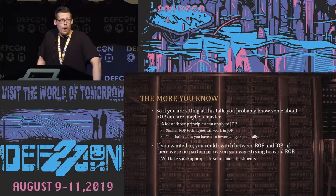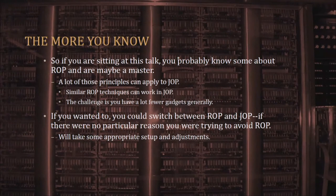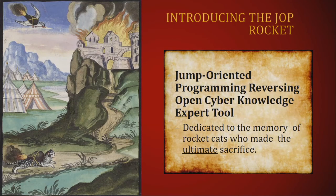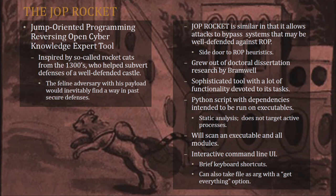Many of you are probably familiar with ROP — you may be masters of ROP. The good news is a lot of that can carry over, so some of those ROP techniques will also apply to JOP as well. At this point we want to introduce the JOP rocket and honor the sacrifice that ancient rocket cats made so many centuries ago to deliver their malicious payload. In the 1300s there were so-called rocket cats that would have explosives strapped to their back and would subvert the defenses of a well defended castle. JOP rocket tries to do the same thing — we can get past ROP heuristics.